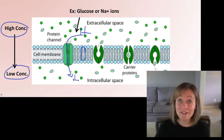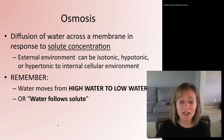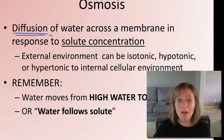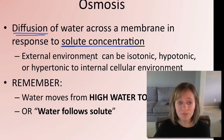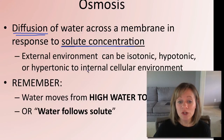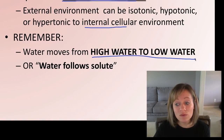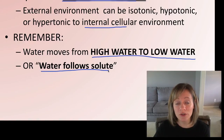A huge way a cell maintains homeostasis is by moving water inside or outside the cell, and this is called osmosis. Osmosis is simply the diffusion of water — still passive, still from high to low — but it's just the movement of water across a membrane in response to a change in solute concentration. The external environment can be isotonic, hypotonic, or hypertonic to the internal cellular environment. When thinking about osmosis, remember: water always moves from high water to low water, or simply — water follows solute.